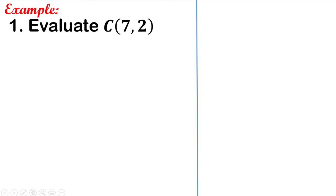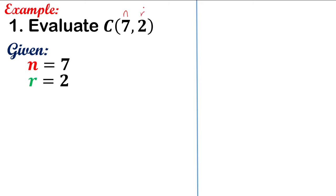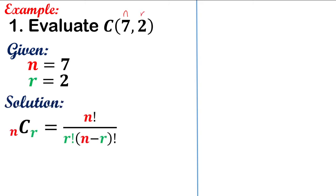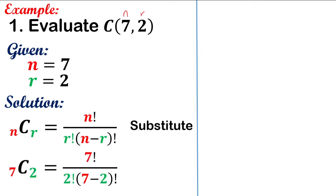Let's evaluate the combination of 7 things taken 2 at a time — so n is 7 and r is 2. The working equation is nCr = n factorial over r factorial times (n minus r) factorial. Substituting, we have 7 factorial over 2 factorial times (7 minus 2) factorial. Evaluating, 7 minus 2 is 5, so we have 7 factorial over 2 factorial times 5 factorial.